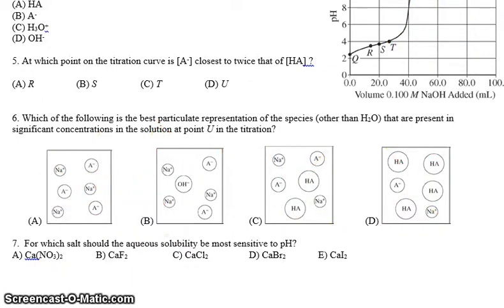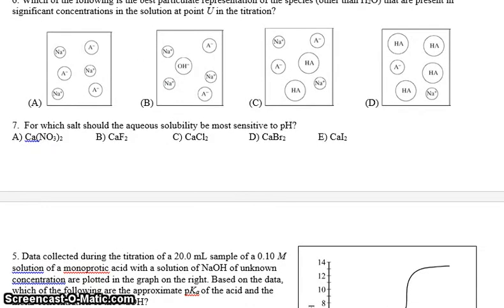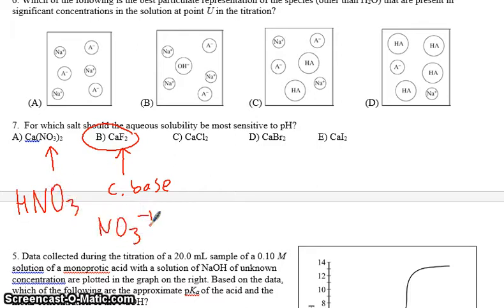This very last question actually refers not to acids and bases, but to KSP, which we mentioned at the end of the chapter. So here it says, for which salt should the aqueous solubility be most sensitive to pH? Now what this is referring to is the fact that many salts have an anion that's the conjugate base of a previous acid, and if it's a conjugate base, then it will react with the acid. So what we're asking is which of these solutions really has a big conjugate base? Now, the way to figure this out is that nitrate originally came from nitric acid. In other words, it's the conjugate base. Nitrate is the conjugate base of nitric acid, which means it's an extremely weak base.